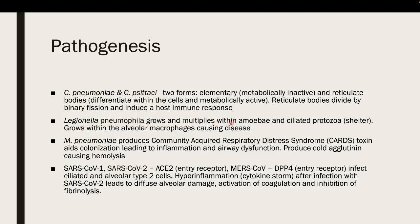Legionella pneumophila grows and multiplies within amoeba and ciliated protozoa, which serve as its reservoir. Within the human host, it grows within alveolar macrophages, causing disease. For Mycoplasma pneumoniae, it produces a community-acquired respiratory distress syndrome (CARDS) toxin which aids colonization and leads to inflammation and airway dysfunction. It may also produce cold agglutinins that cause hemolysis, which is why the presentation may be different — sometimes patients present with mild upper respiratory infection but also have autoimmune hemolytic anemia.